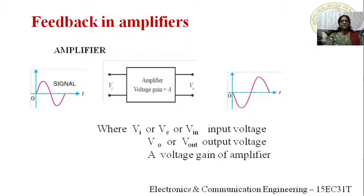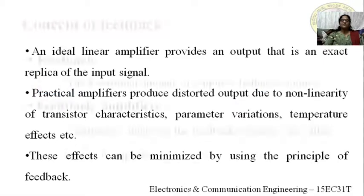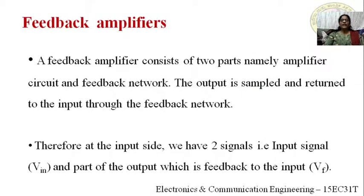A fraction of the signal is fed back to the input through a medium called the feedback network. The overall system — the amplifier with feedback — has two parts: the amplifier and the feedback network. On the input side there are two signals: the input signal VIN and the feedback signal VF, which is the part of the output fed back through the feedback network.